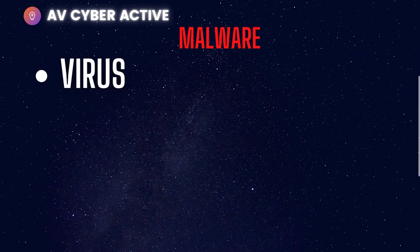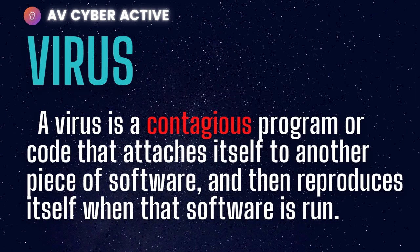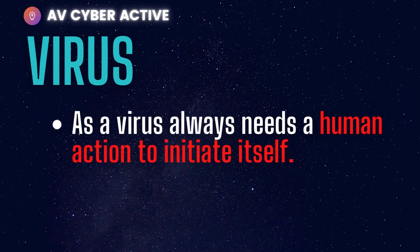Let's start with the first one: virus. A virus is a contagious program or code that attaches itself to another piece of software and then reproduces itself when the software is run. In simple words, a virus always needs to be propagated — it always needs a human action to initiate itself.